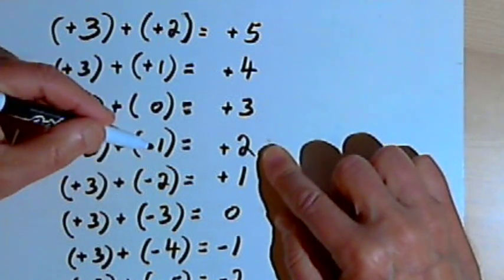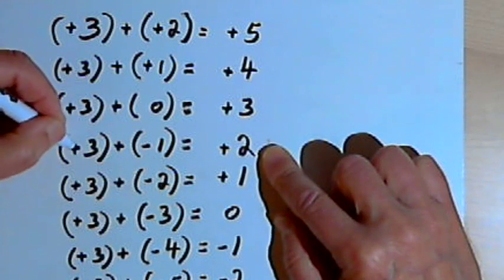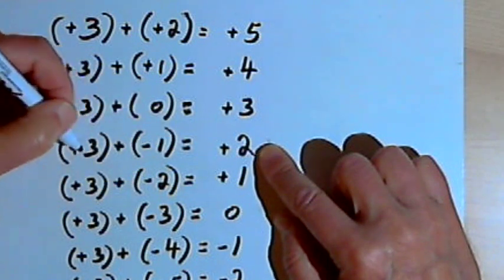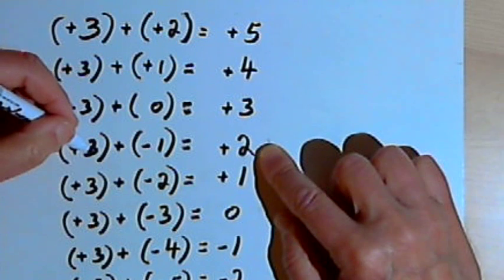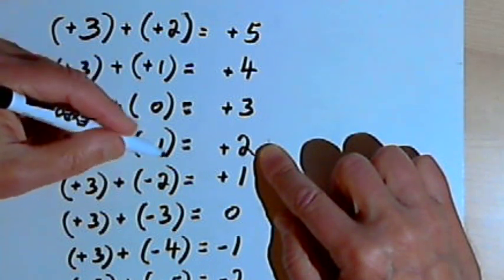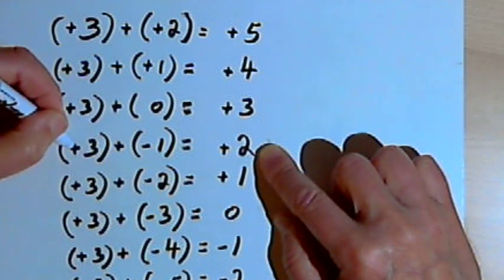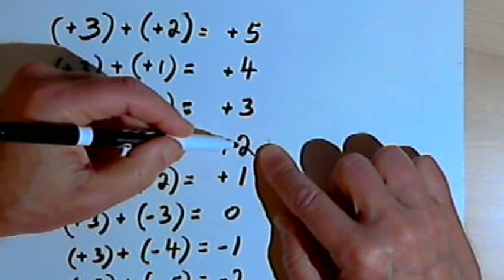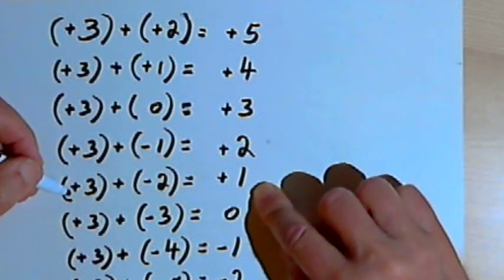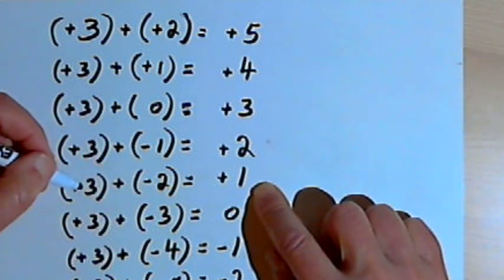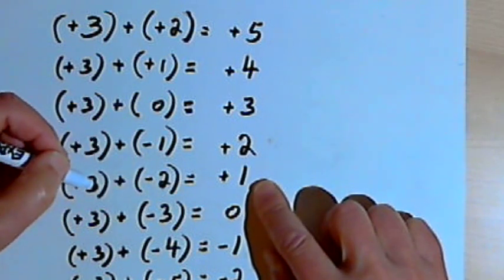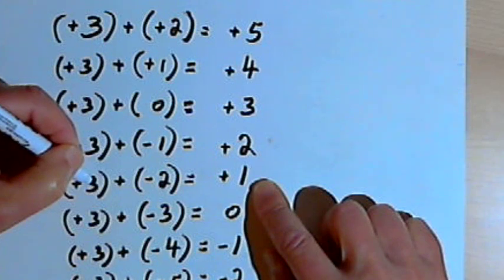Now I'm moving into the area where I'm adding negative numbers to positive 3. Positive 3 plus negative 1 is positive 2. The logic is that the absolute value of 3 is greater than the absolute value of 1, so I use the sign that the 3 had, which was positive, and then find the difference between those two absolute values — the difference between 3 and 1 is 2. The same thing happens with positive 3 plus negative 2: I end up with positive 1, because 3 is bigger than 2 and the difference of their absolute values is 1.